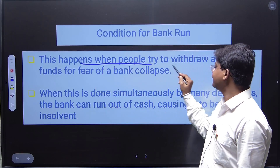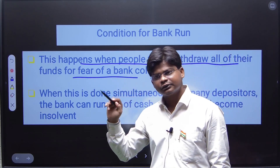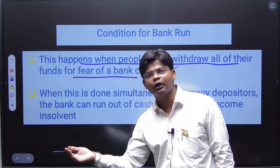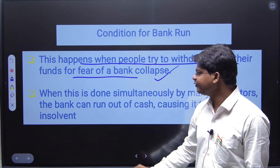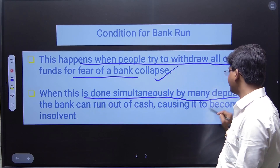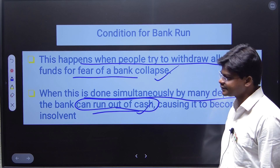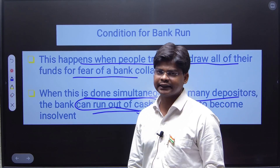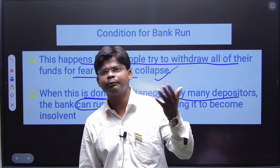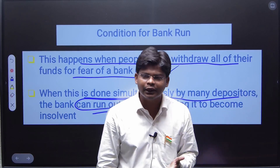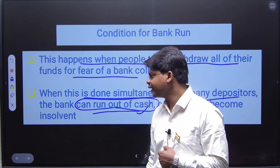A bank run happens when people try to withdraw all of their funds out of fear of the bank collapsing. People go to the bank in fear and immediately ask for their money back. When this is done simultaneously by many depositors, the bank can run out of cash. The bank has a large number of depositors — thousands, ten thousands, one lakh — so it cannot give everyone their money back at one single point in time.